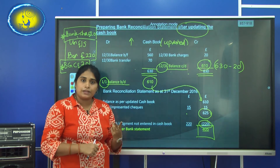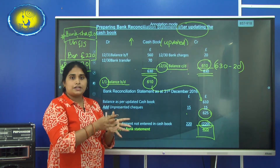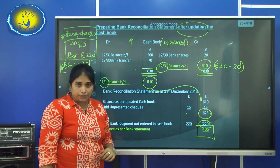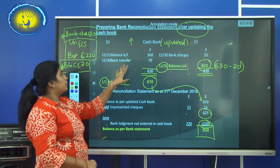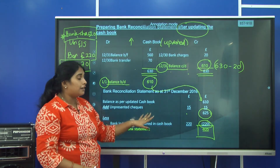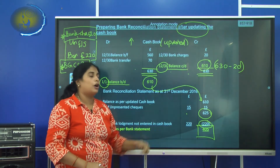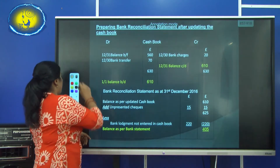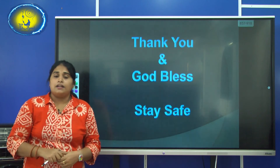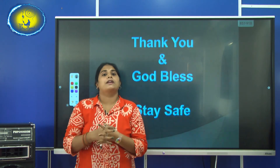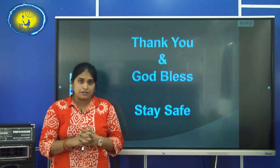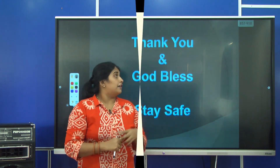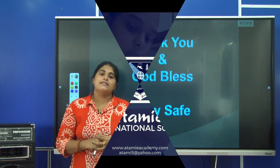You can use two methods: either use all the reasons and make the bank reconciliation statement without updating the cash book, or update the cash book first and use the updated amount to make the bank reconciliation statement. I hope you understood how to make a bank reconciliation statement. Do the other activities which are in your textbook. Thank you, God bless you and stay safe.